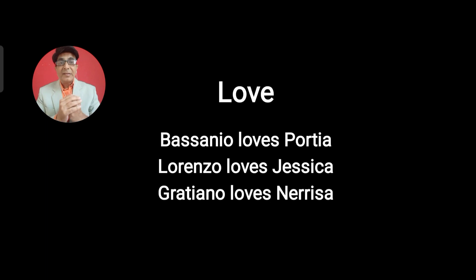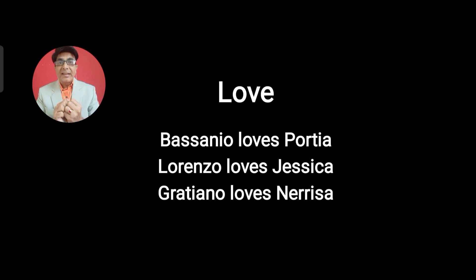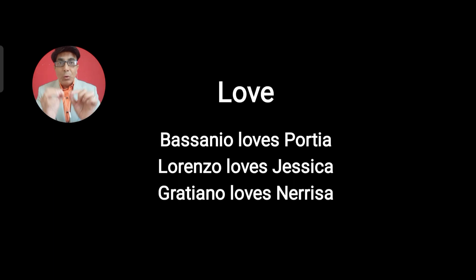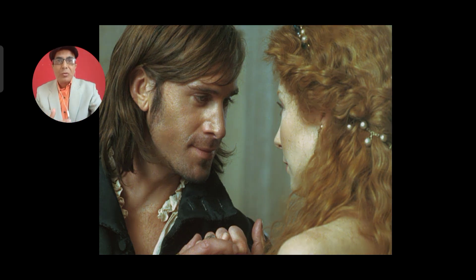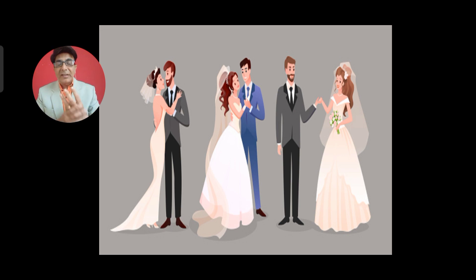The fourth idea is love, and in this play we see three couples: Bassanio falls in love with Portia, Lorenzo loves Jessica, and Gratiano loves Nerissa. As Shakespeare said in another play, the path of true love is not always rosy — the same happens here. All three couples face obstacles in their love lives, but towards the end of the play they all get united and married, and the play ends happily.